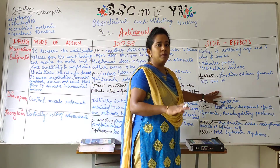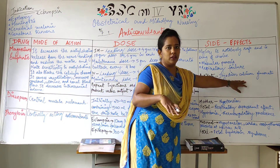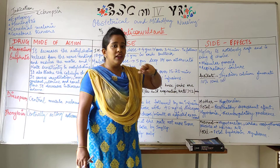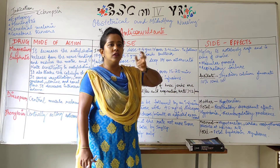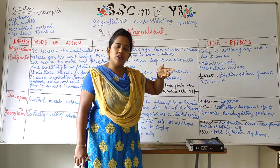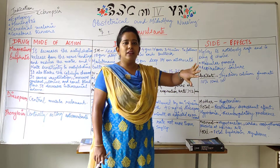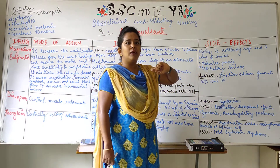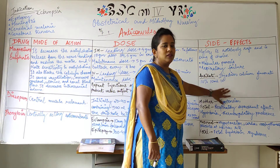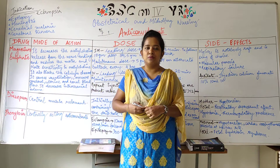The antidote for magnesium sulphate toxicity is calcium gluconate. If the mother is having any such side effects, immediately close the magnesium sulphate dose — stop the IV infusion if it is running. Then administer calcium gluconate 10%, 10 ml IV. This is the antidote for magnesium sulphate.